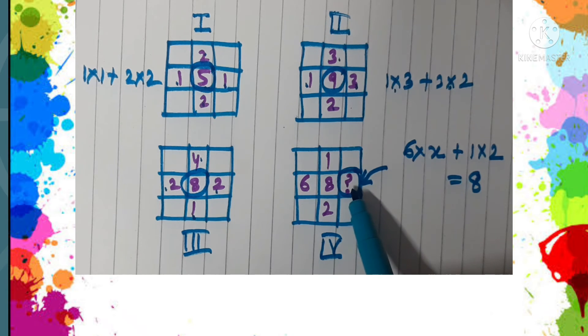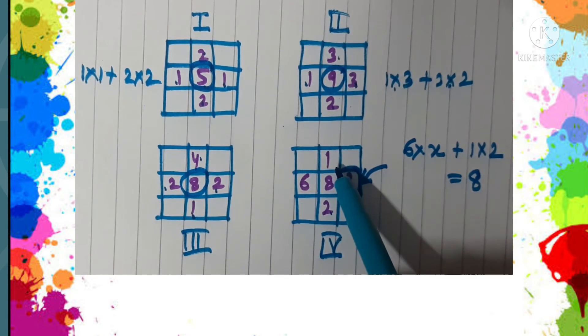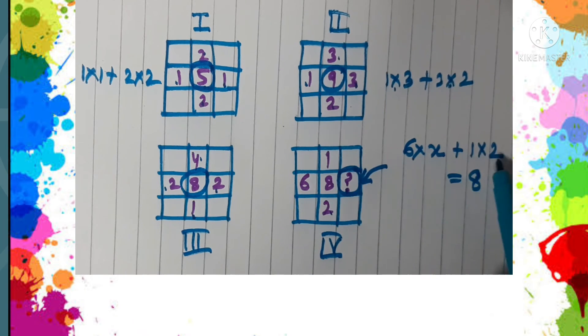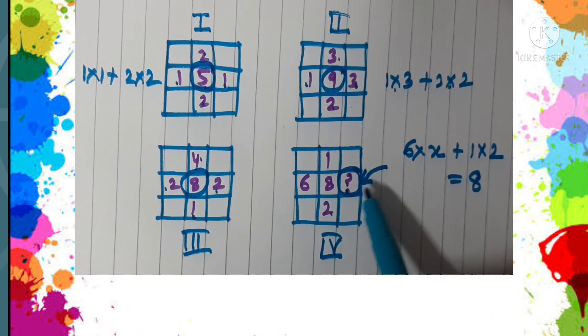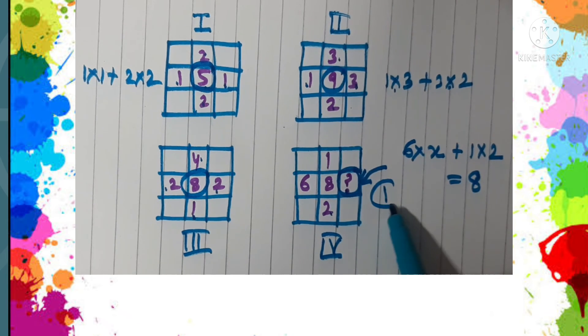Here it should be one. So six into one is six, plus two into one is two, and six plus two is eight. So the answer to this question is one.